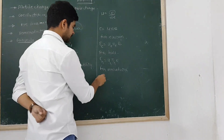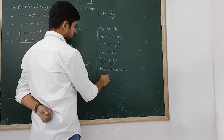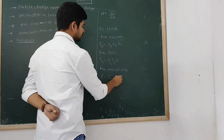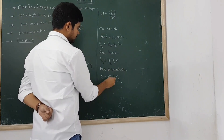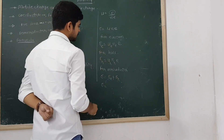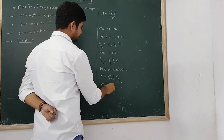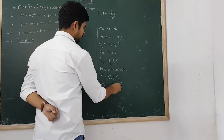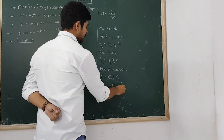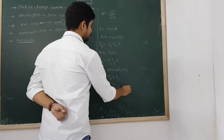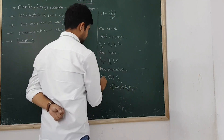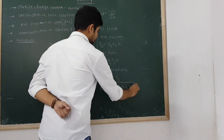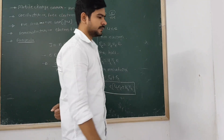For semiconductors, because of both electrons and holes, the total conductivity is σ_total = σ_e + σ_h, and when you add those two equations you find: σ_total = (μ_e · n_e + μ_h · n_h) · e. This is the conductivity of a semiconductor.